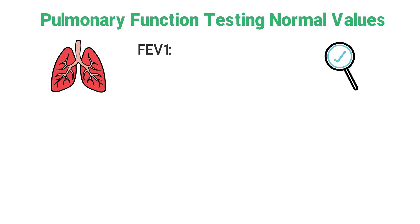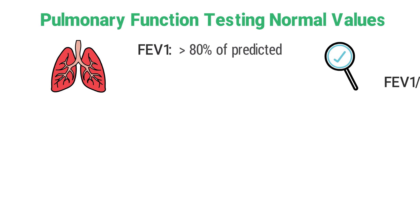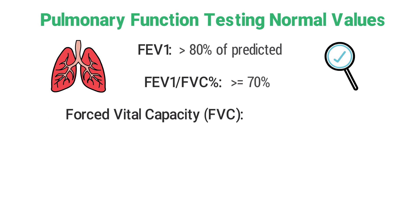The normal FEV1 should be greater than 80 percent of the predicted value. The normal FEV1 to FVC ratio should be greater than or equal to 70 percent.